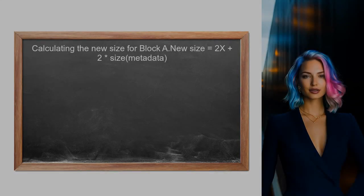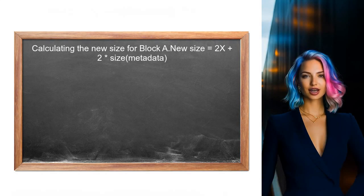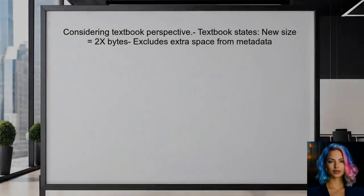The user should calculate the new size for block A after coalescing. This includes the size of block A, the size of block B, and the metadata from both blocks. However, the user should also consider the textbook's perspective, which states that the metadata will report only the size of the free space, excluding the additional space from the metadata itself.